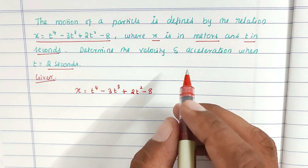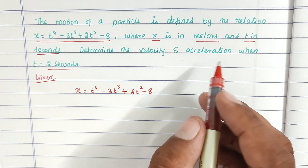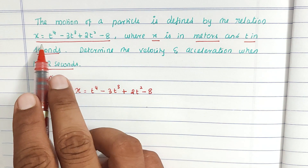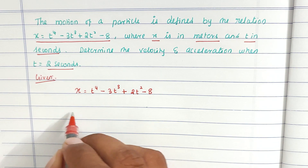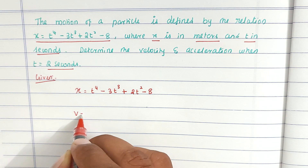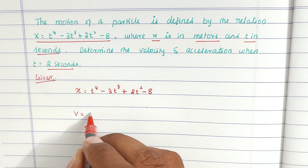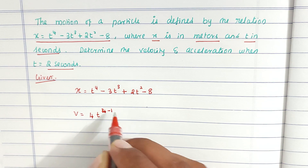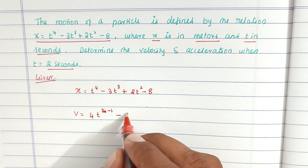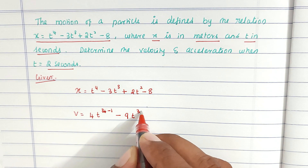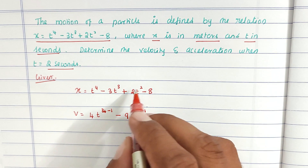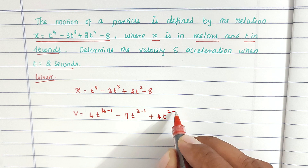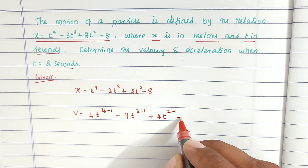To find out the velocity, we differentiate the motion equation one time. So v equal to 4 into t power 4 minus 1, minus 3 into 3 into t power 3 minus 1, plus 2 into 2 into t power 2 minus 1, minus 0.